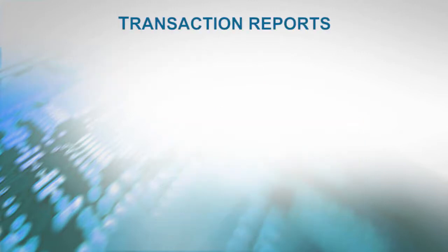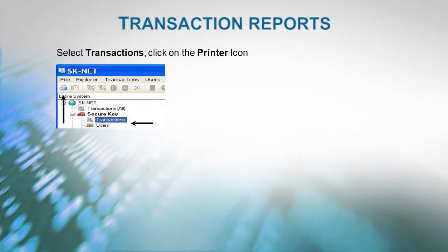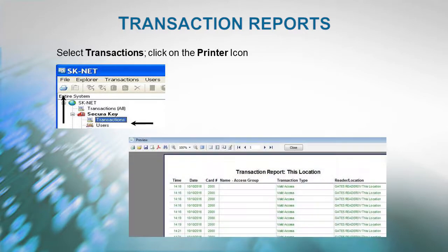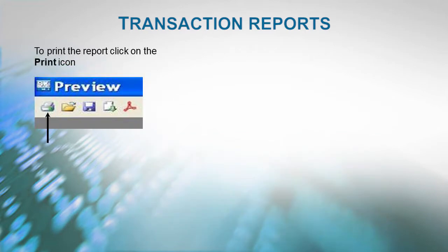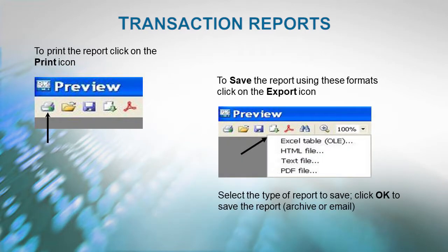For Transaction Reports, select Transactions, then click on the printer icon. To print the report, click on the Print icon. To save the report to Excel, HTML, text, or PDF formats, click on the Export icon, as shown here.